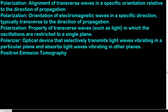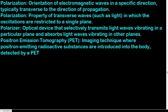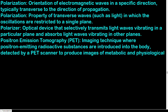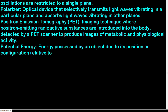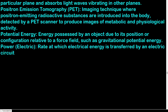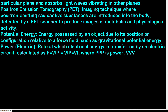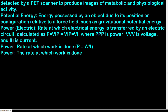Positron emission tomography (PET): imaging technique where positron-emitting radioactive substances are introduced into the body and detected by a PET scanner to produce images of metabolic and physiological activity. Potential energy: energy possessed by an object due to its position or configuration relative to a force field. Power: rate at which work is done or energy is transferred; P = W/T. Electric power: rate at which electrical energy is transferred in a circuit; P = VI.